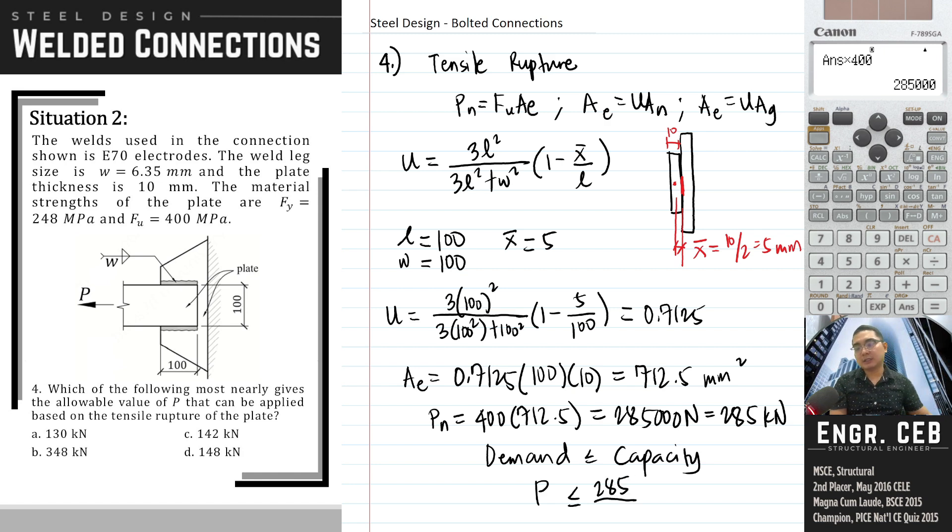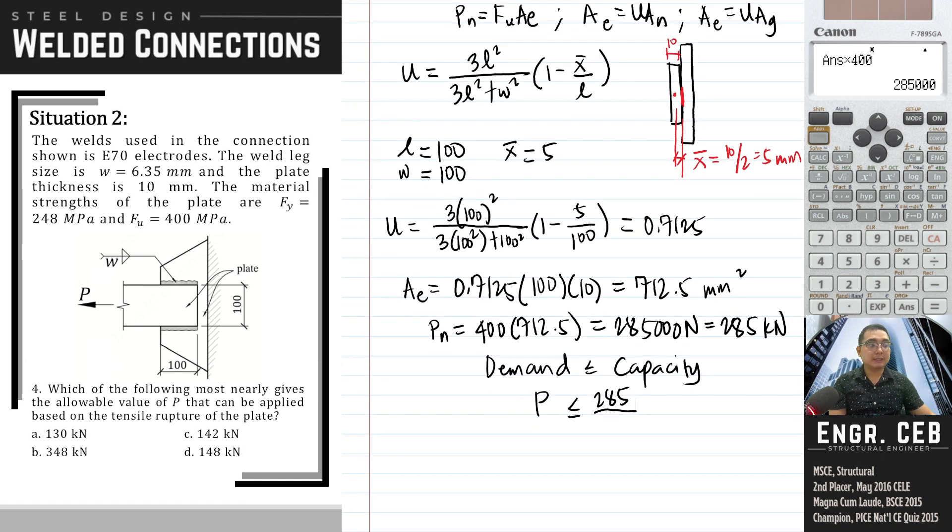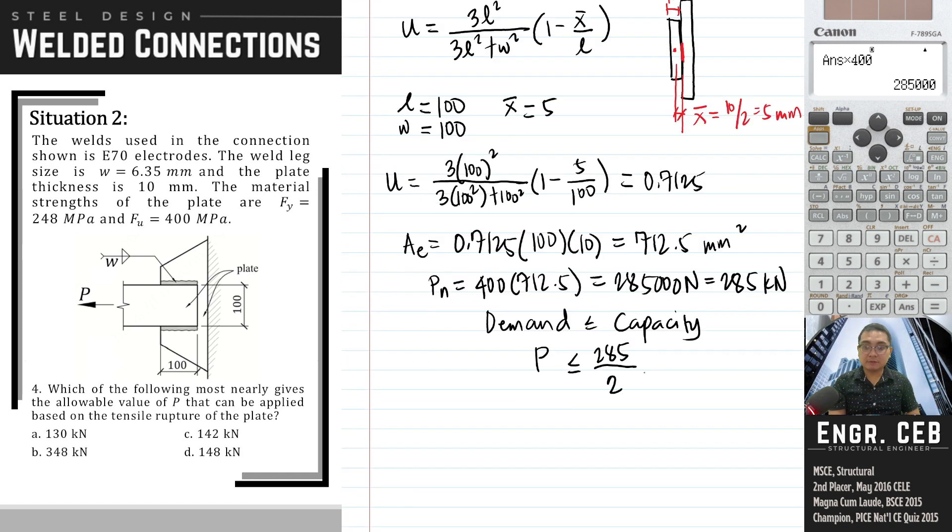285, we divide this by the factor of safety for tensile rupture. So factor of safety for tensile rupture is 2. Therefore, the value of P is 142.5 kilonewtons. And that is letter C.